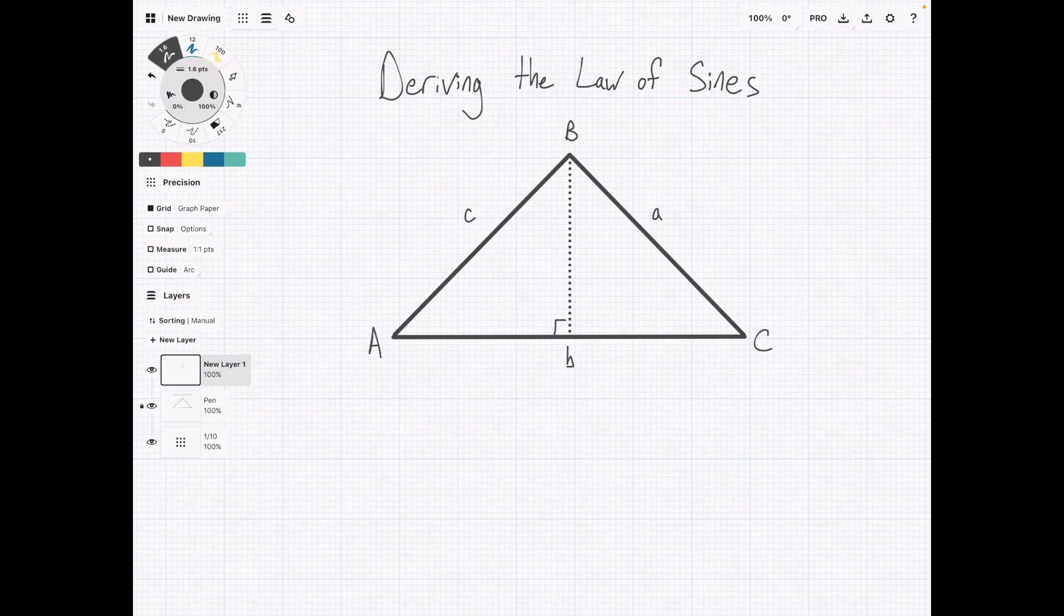Both of these are going to be 90 degree angles making both of the triangles that we just created, 1 and 2, right triangles.